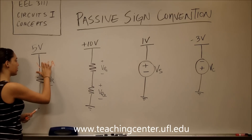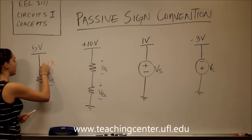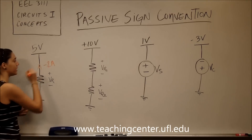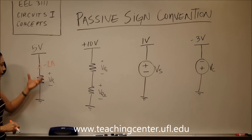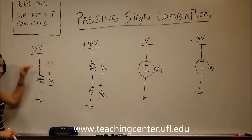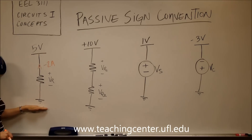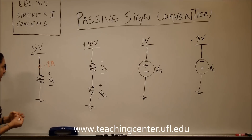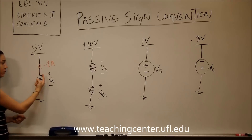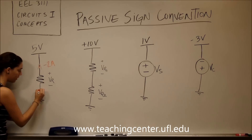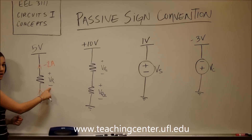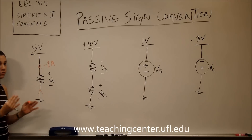What if we say that the current is disobeying passive sign convention? Then we would point the current going up and the two amps would now be negative. It would be negative because the common way current flows is from the highest potential to the lowest potential. In this case, passive sign convention would not be obeyed because the current is pointing out of the positive pole, or equivalently, into the negative pole.